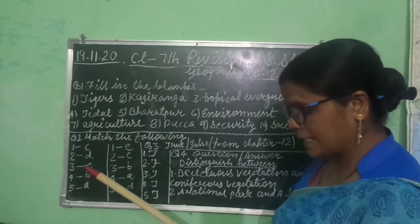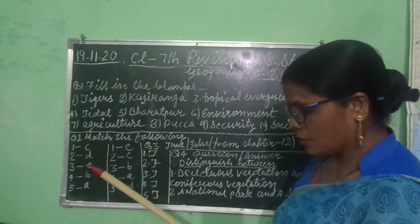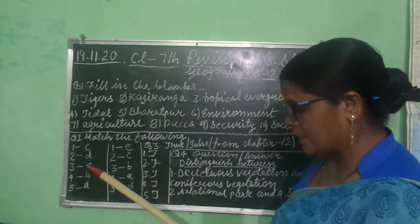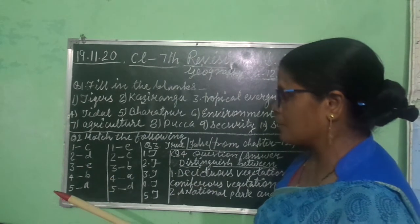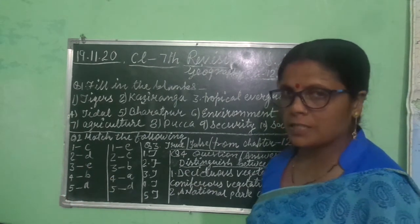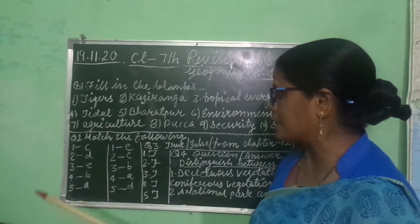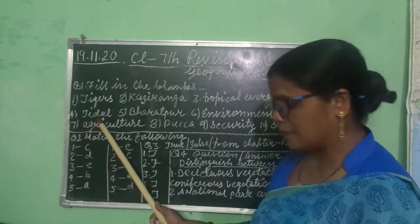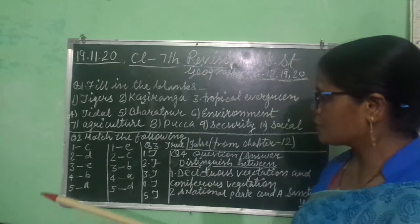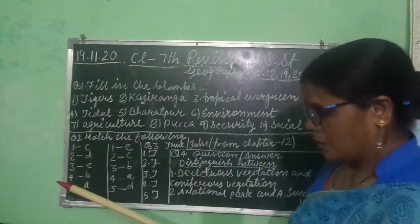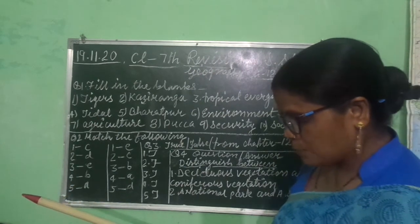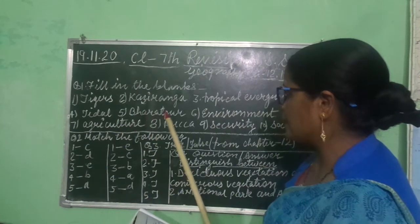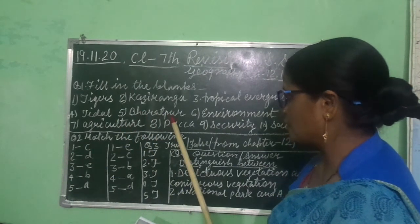Next, tidal forests are found mainly along the deltas of the rivers. Kis tarah ke forest deltas, rivers ke aas paas hote hain? Tidal. Next, there is a large bird sanctuary at Bharatpur. Okay?